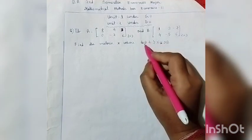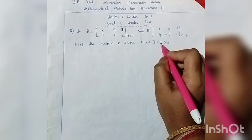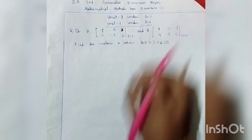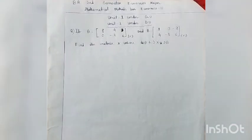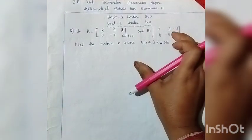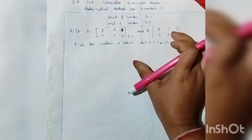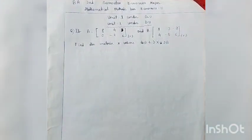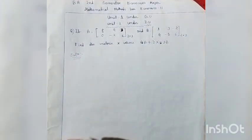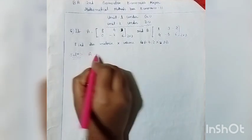So from the equation 4A plus twice X equals twice B, we rearrange to find the X matrix. We will use scalar matrix operations and matrix subtraction to solve this. This is an important exam-perspective question.